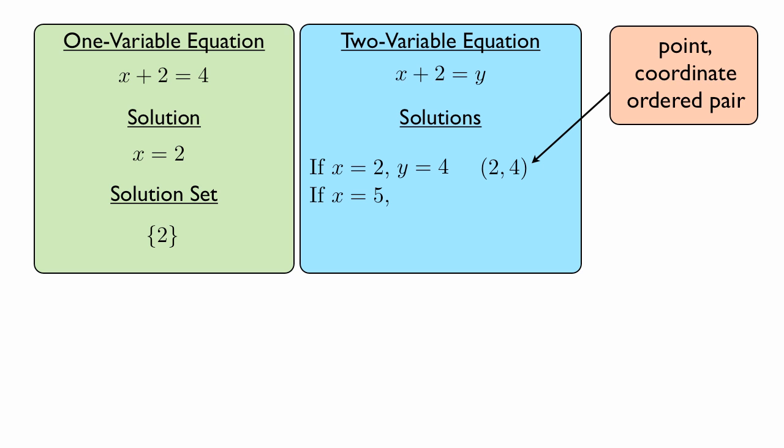Here's another example. If x was equal to 5, then y would be equal to 7, because 5 plus 2 equals y, and 5 plus 2 equals 7. So the point (5, 7) would be a solution.